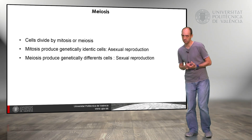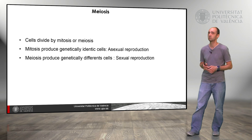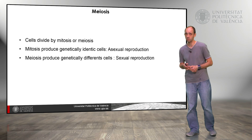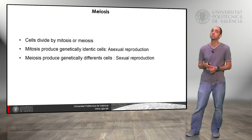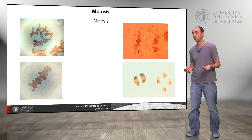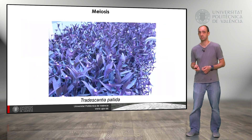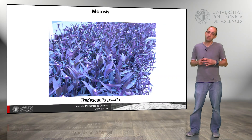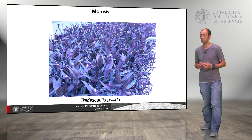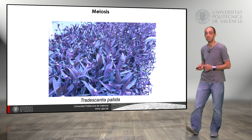Meiosis is a process of cell division. Cells can divide by mitosis or meiosis. In mitosis we produce genetically identical cells, what we call asexual reproduction, while in meiosis we produce genetically different cells, what we call sexual reproduction. Here we can see some cells in meiotic division with different steps. We can observe meiosis in sexual organs, like in this sample of flowers, and we are going to use this plant species called Tradescantia pallida.